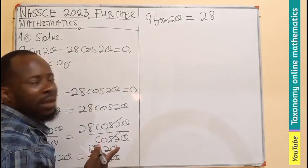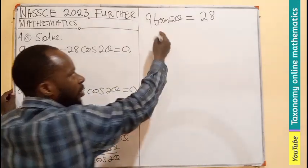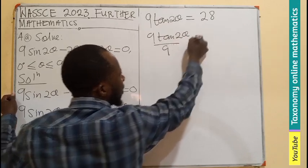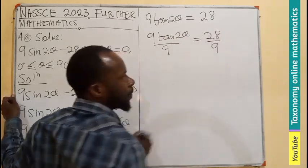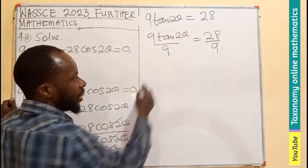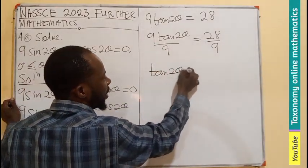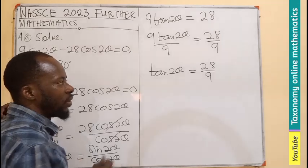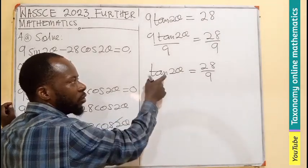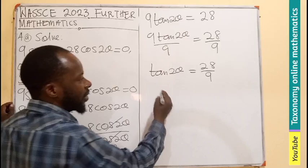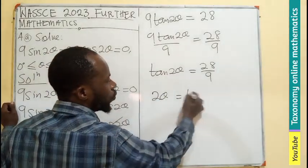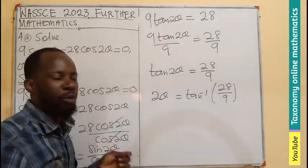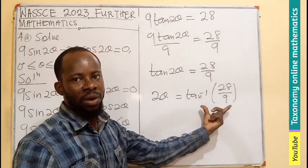But I am looking for the theta, so I have to divide by this coefficient, meaning 9 tan 2 theta divided by 9 equals 28 divided by 9. The 9 will cancel, so you will be left with only tan 2 theta equals to 28 divided by 9. We find the tan inverse of both sides, meaning your 2 theta will equal the tan inverse of 28 divided by 9.